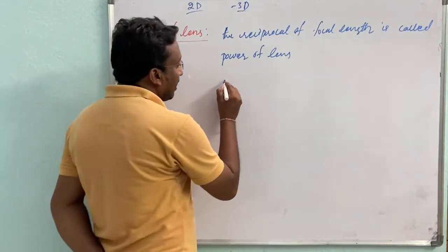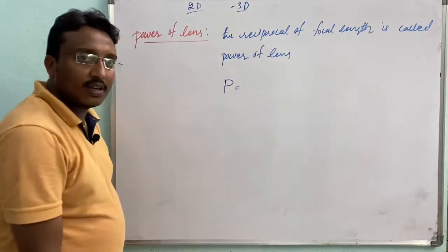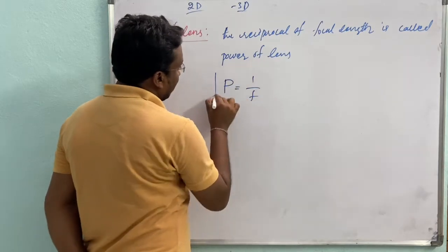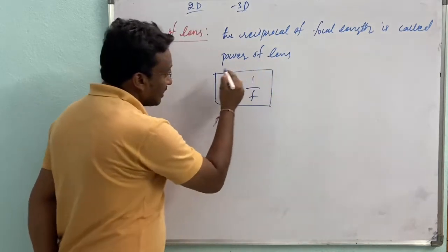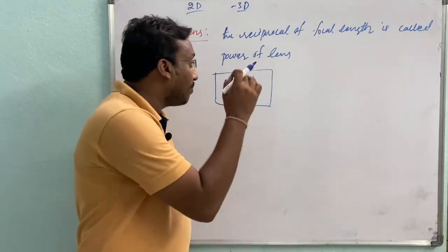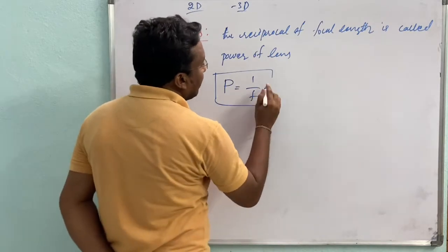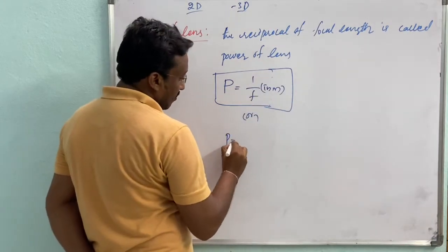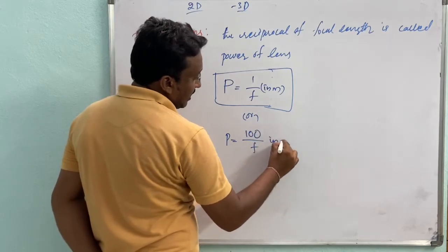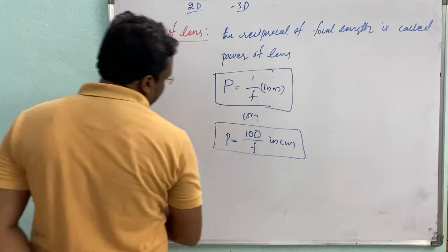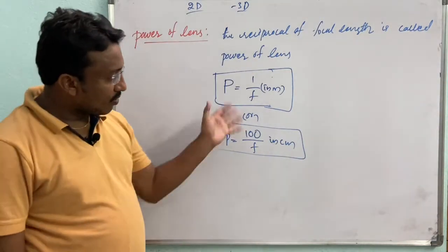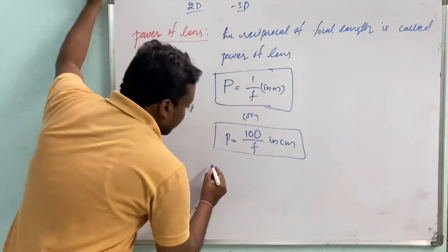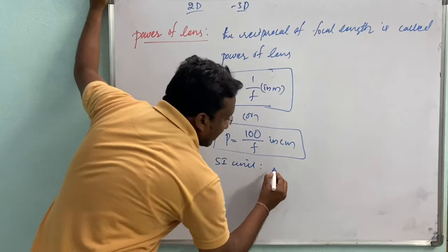The power of a lens is designated with capital P. The mathematical principle to find the power of a lens is the reciprocal of focal length: P = 1/f, where f is in meters. In centimeters, the formula becomes P = 100/f. The SI unit of the power of a lens is diopter.